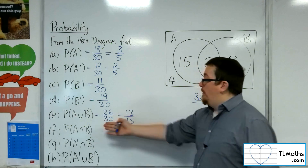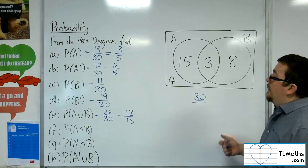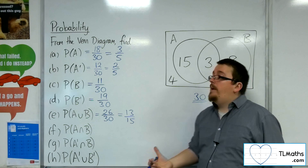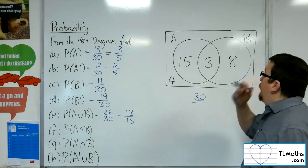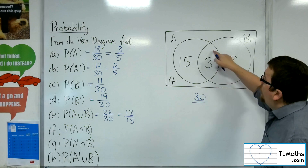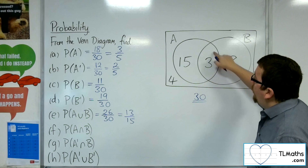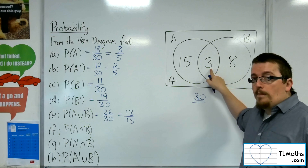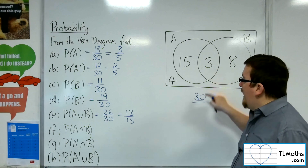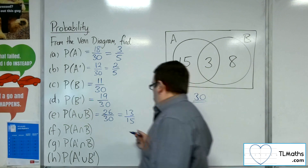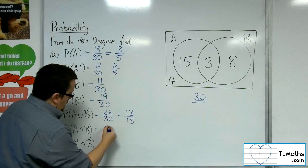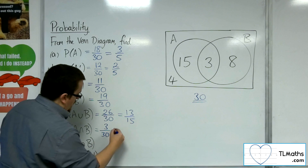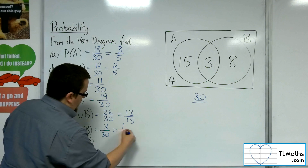Now the probability of A intersection B — that's the probability of A and B — is the intersection where the two circles overlap. So that would be 3 out of 30, which is just 1 tenth.